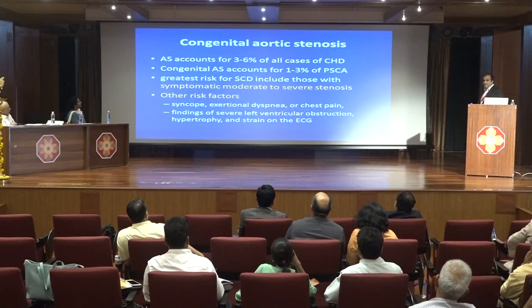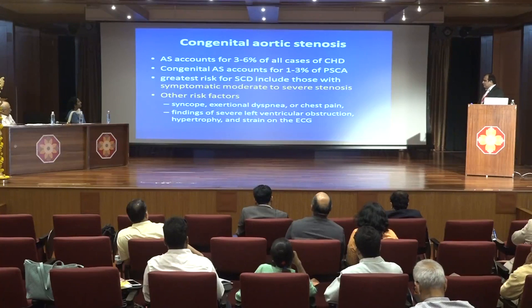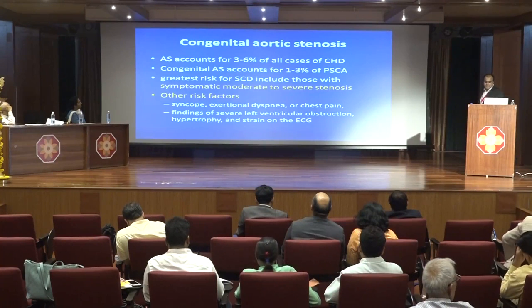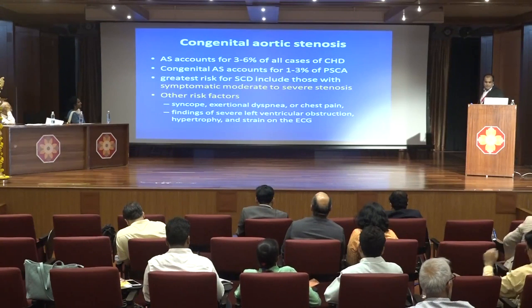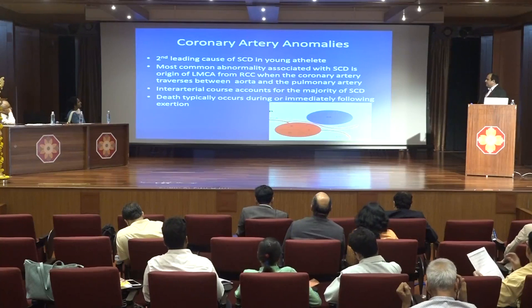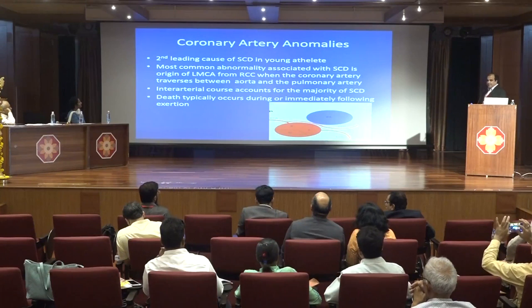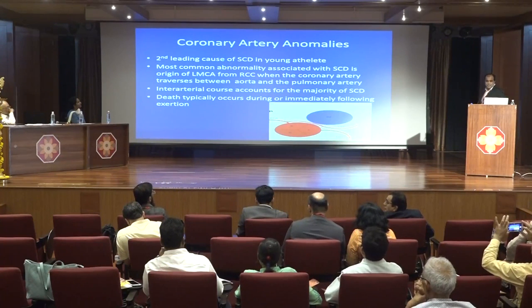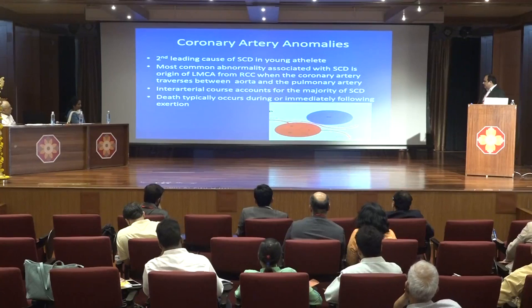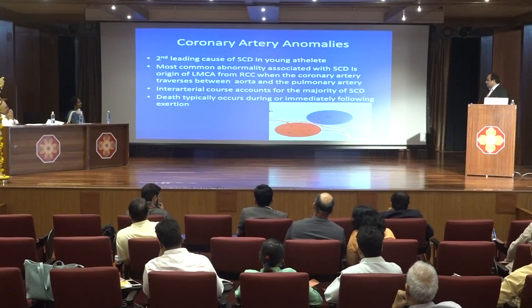Aortic stenosis SCD usually occurs in symptomatic moderate to severe cases. Risk factors include syncope, exertional dyspnea or chest pain, ECG strain pattern, or signs of LVH. Coronary artery anomalies are the second leading cause of sudden cardiac death in young athletes. The most common coronary anomaly associated with SCD is the left main coronary artery originating from the right coronary cusp, with an intramural or inter-arterial course between the pulmonary artery and the aorta.